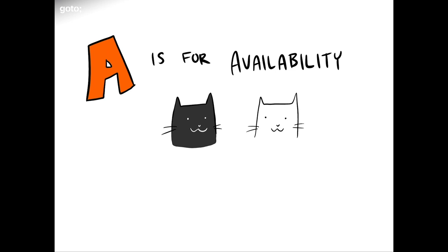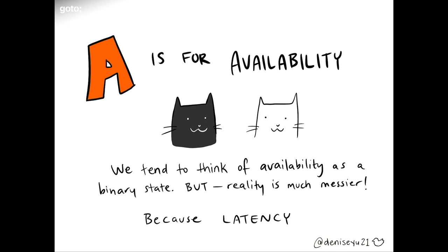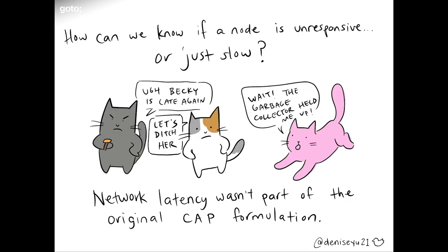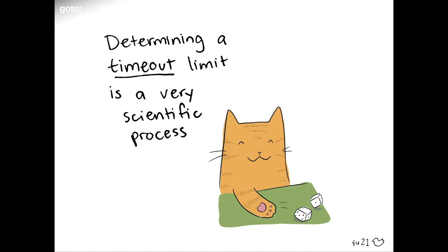A is for availability — I'm not going to trick you this time. We tend to think about things as being available or not, but in reality things are a lot messier because of network latency — it's not quite a binary. How can we know if a node is truly unresponsive or just slow? Network latency wasn't part of the original CAP formulation, but it has really big impacts in terms of how we detect and respond to network partitions. One way to deal is to just set a timeout — decide we're only going to wait for nodes to respond for a set amount of time. But determining a reasonable timeout is really tricky, especially before you really learn your system.